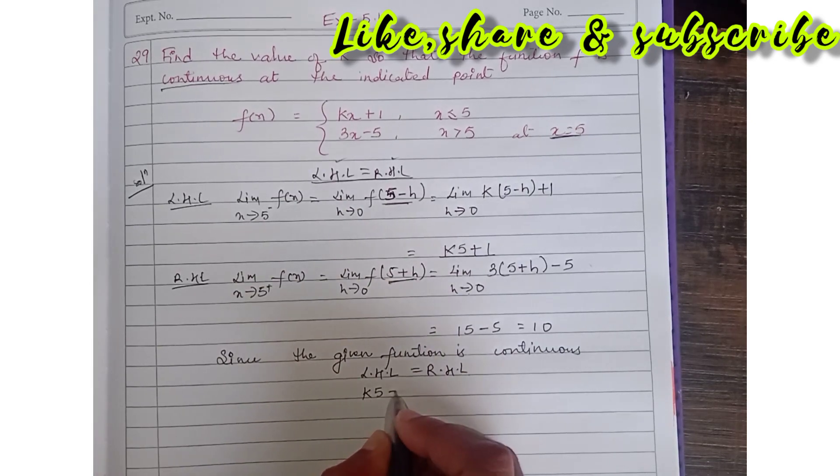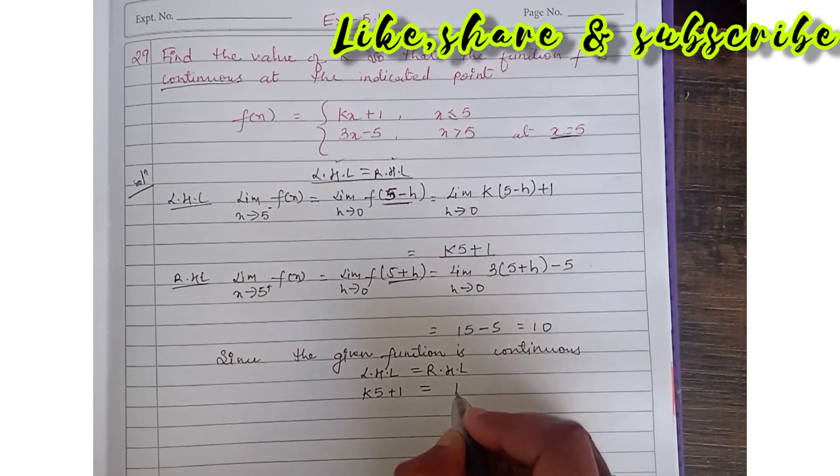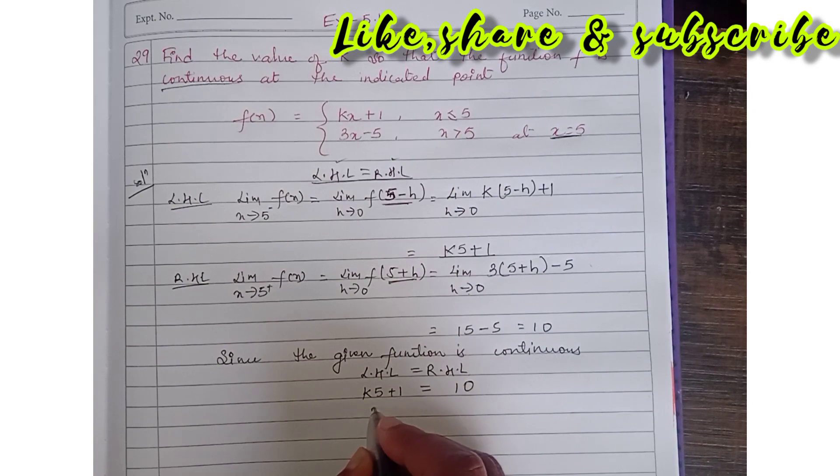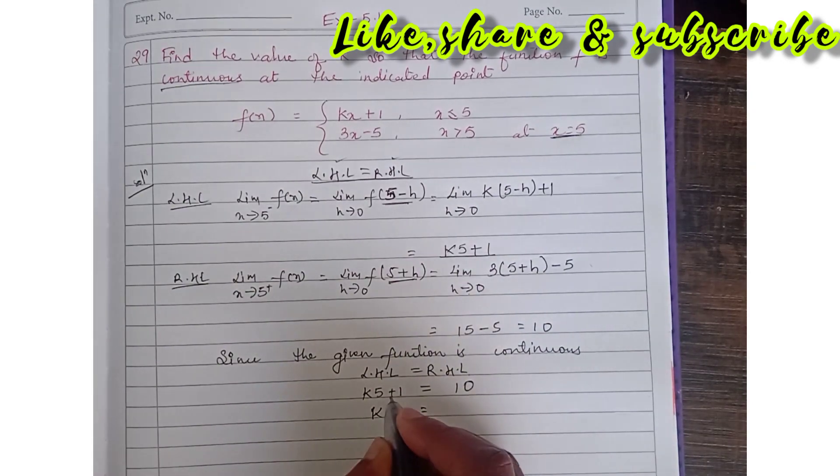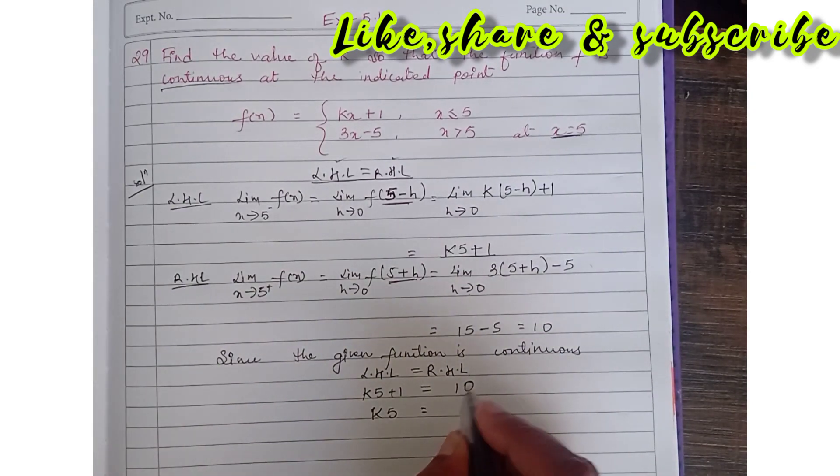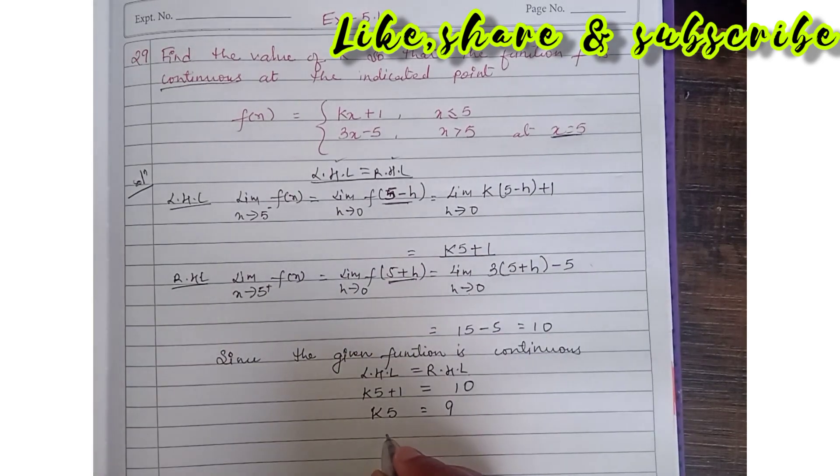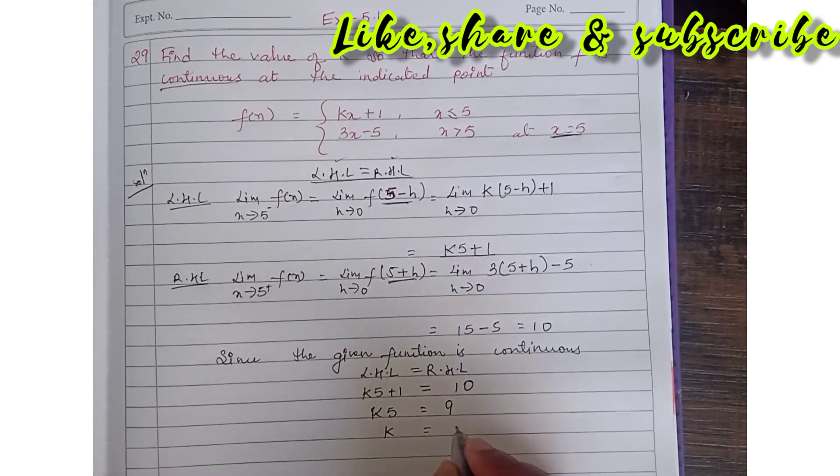So 5k plus 1 equals 10. Then 5k equals 10 minus 1, which is 9. Then k equals 9 divided by 5. So the k value is 9 by 5.